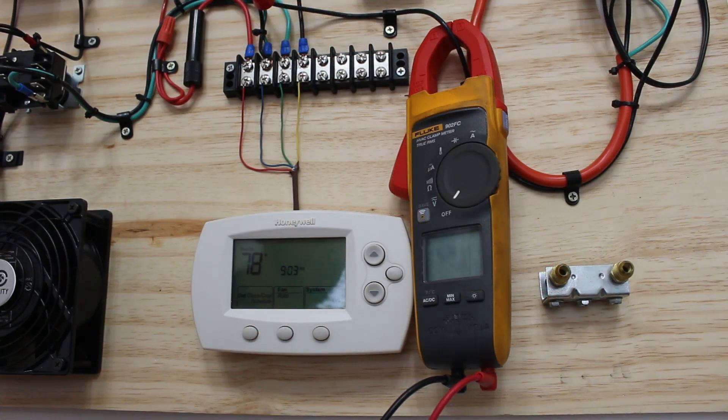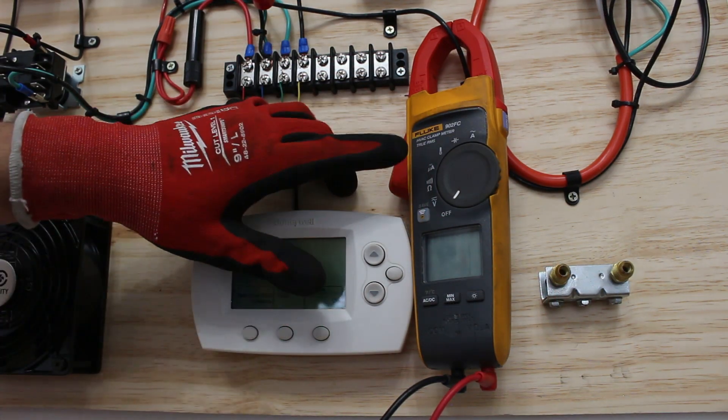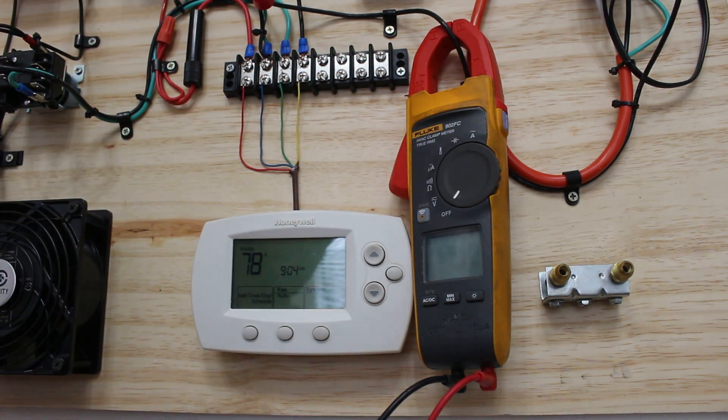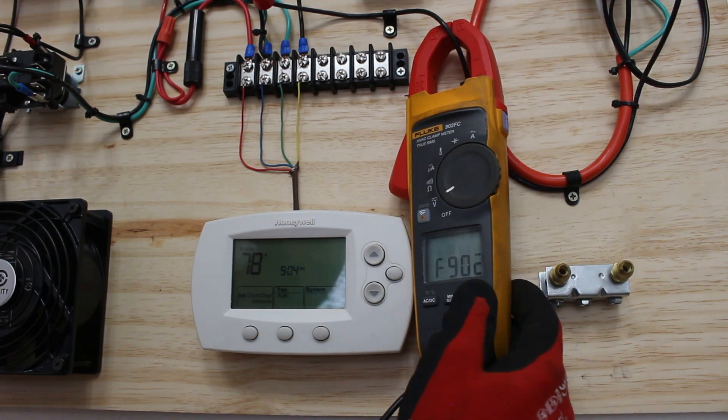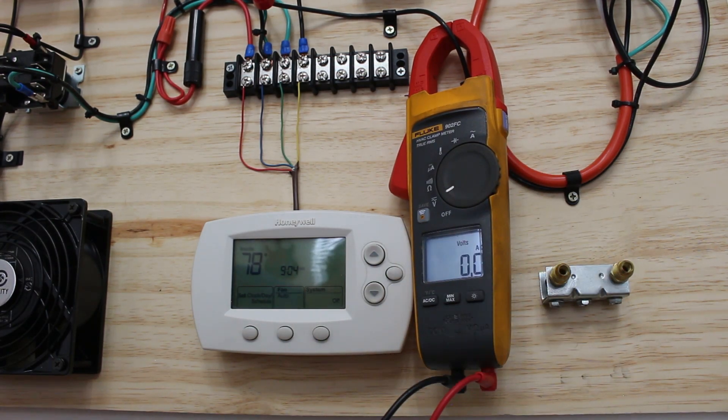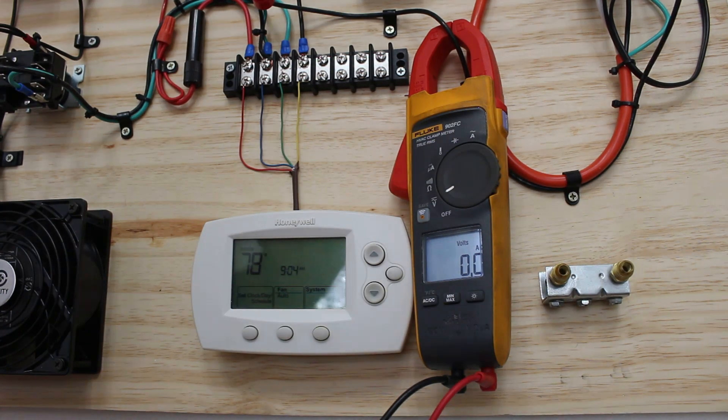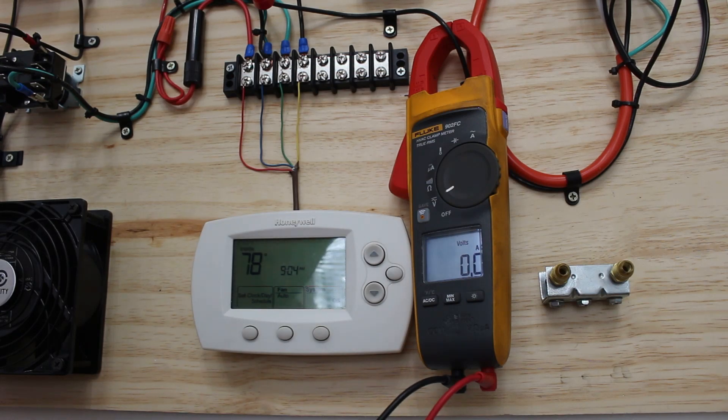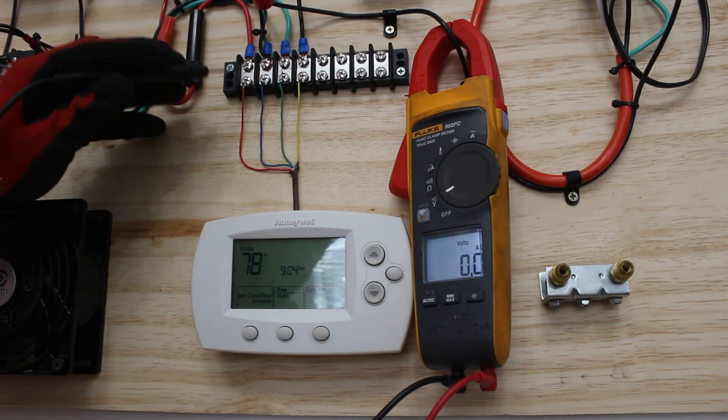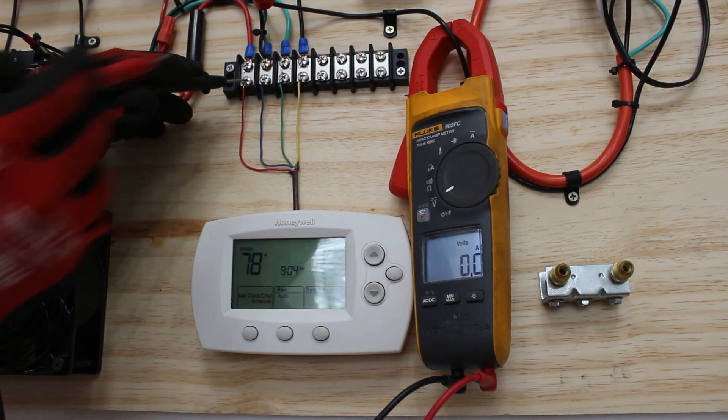The meter I am using today is the Fluke 902 FC HVAC clamp meter. We're going to set our meter to volts AC. Right now we have the thermostat in the off position. Nothing should be happening but since we have power applied between terminal R and C we should have 24 volts. So this is R and this is C.